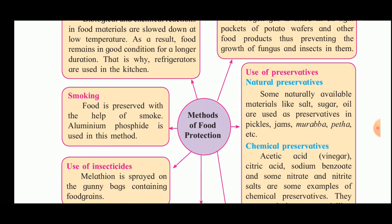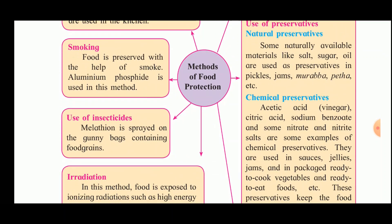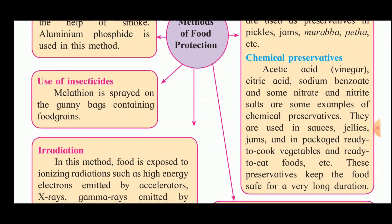The second method is smoking. Food is preserved with the help of smoke, and aluminium phosphide is used in this method. Another method is the use of insecticide — malathion is sprayed on the gunny bags containing food grains, and some injections are also available which are put into these gunny bags.